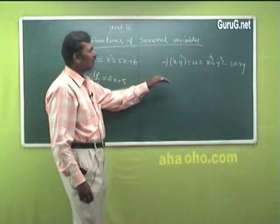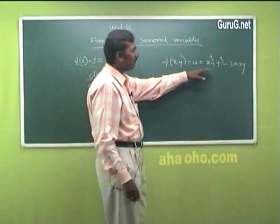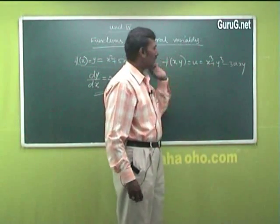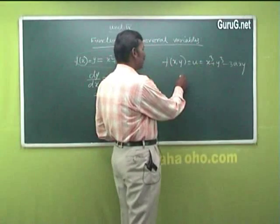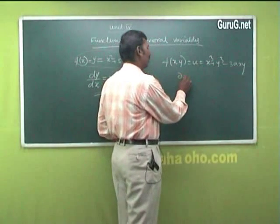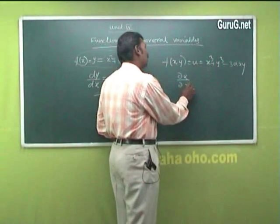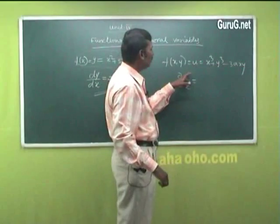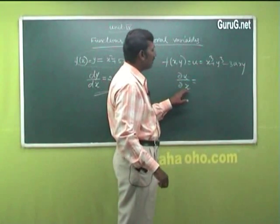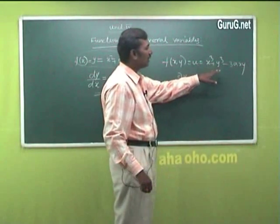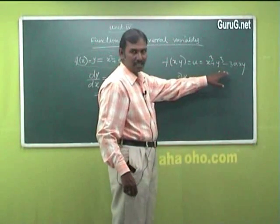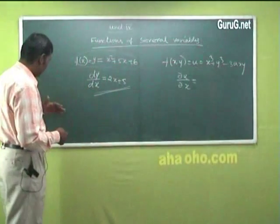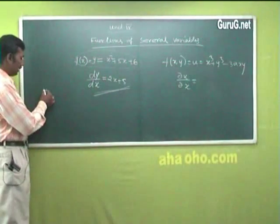If the function has more than one independent variable, we go for partial differentiation — that means ∂u/∂x. Here you differentiate u partially with respect to x, keeping the other variable as constant. So for example, I can give one example and then you can understand it.